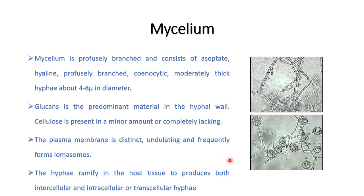The wall of this fungus is mainly made up of glucans, with cellulose present in only a minor amount. It has distinct plasma membranes containing certain invaginations known as lomasomes. All cellular organelles — mitochondria, endoplasmic reticulum, nucleus, and ribosomes — are embedded in the cytoplasm. It is a coenocytic fungus without any crosswalls or septa.